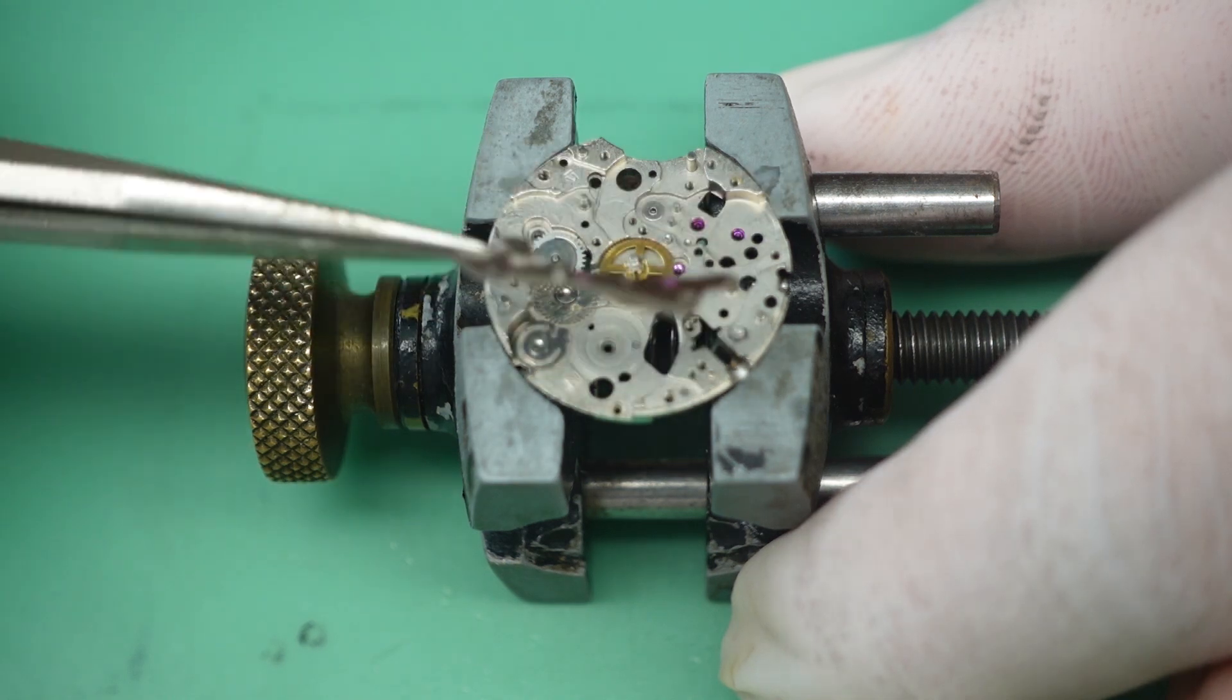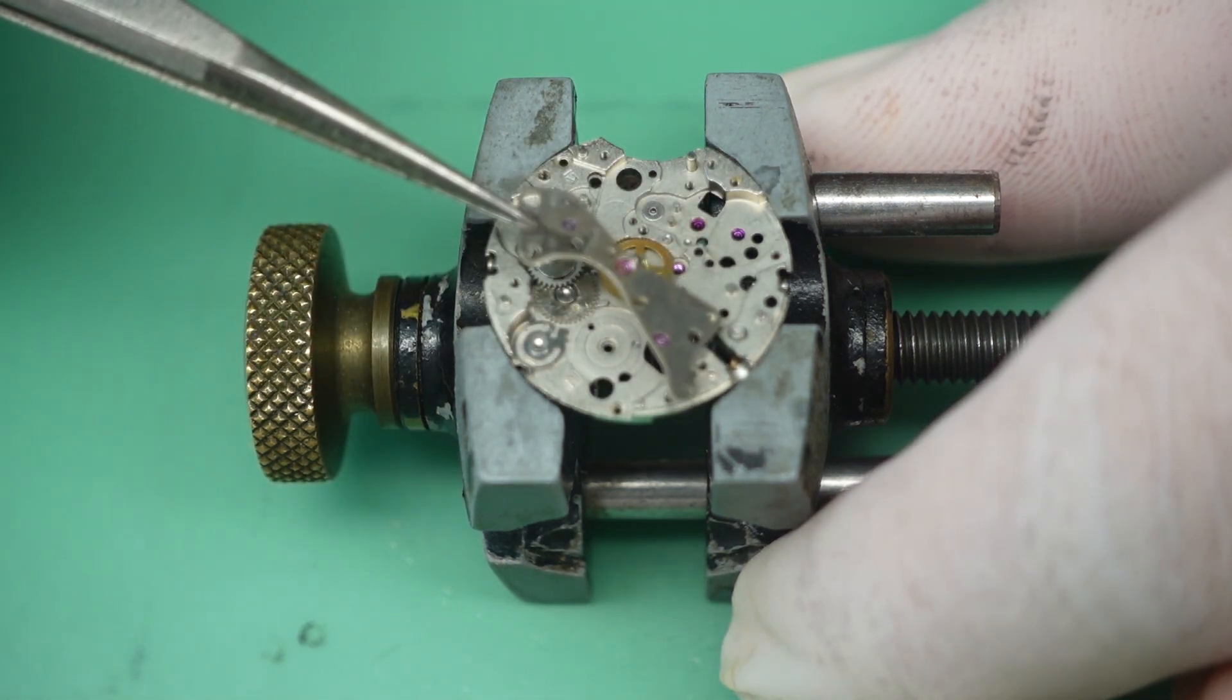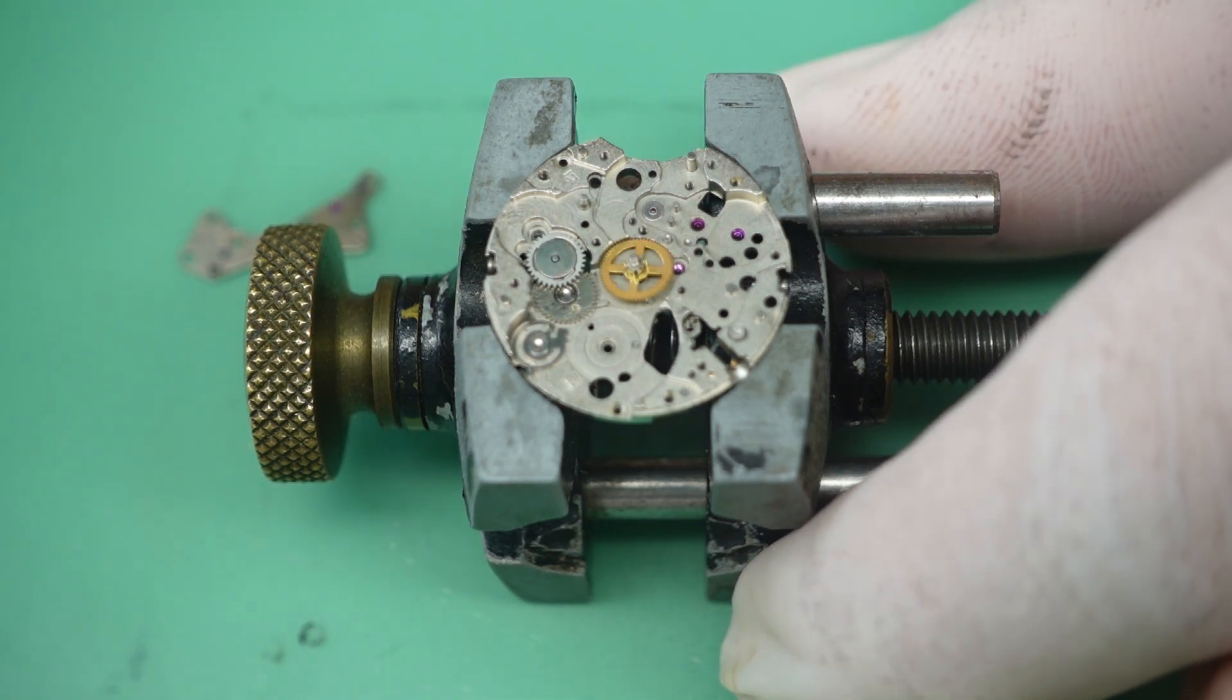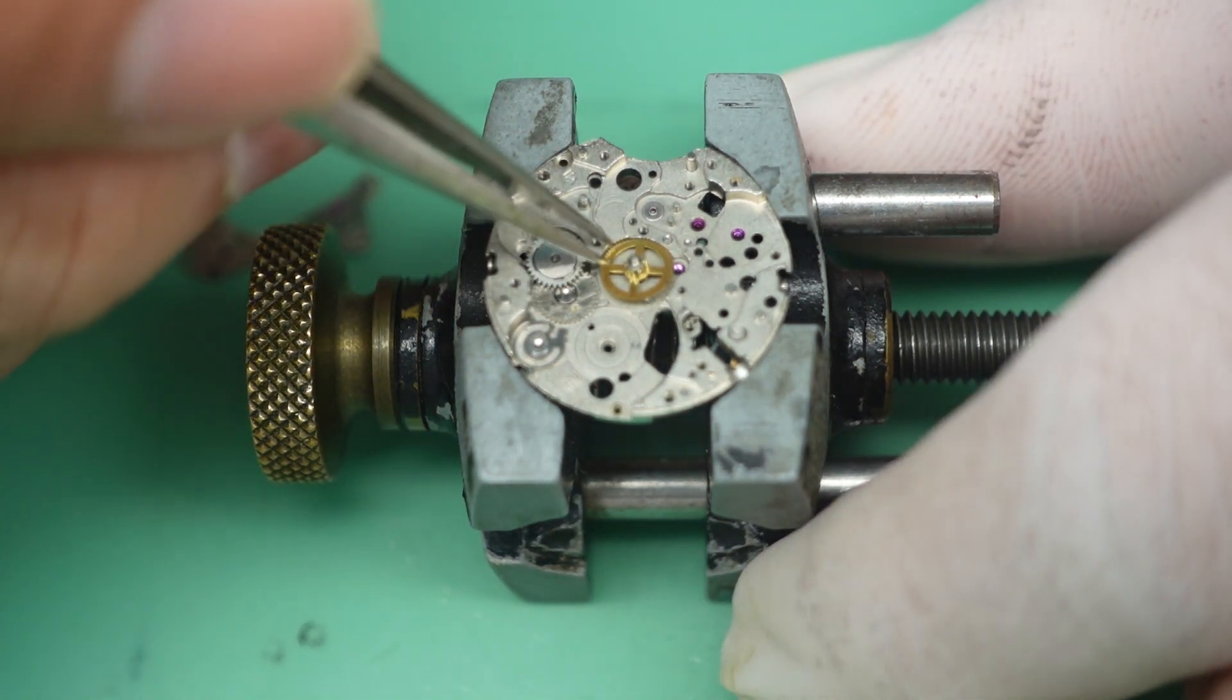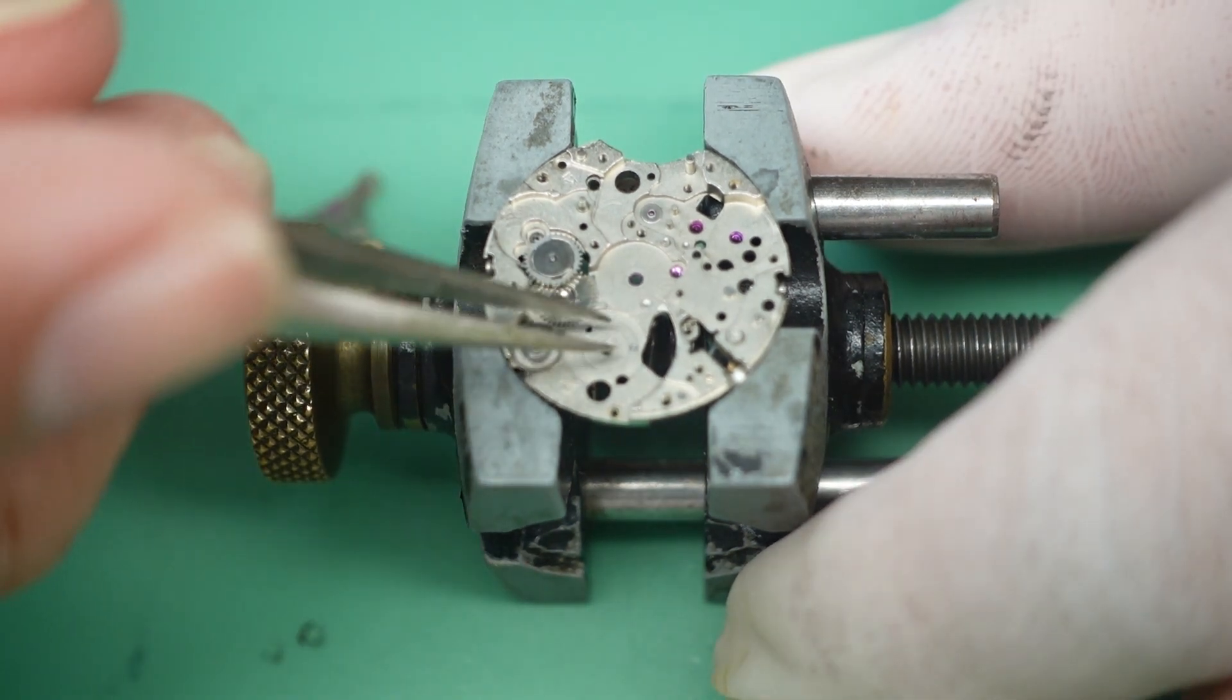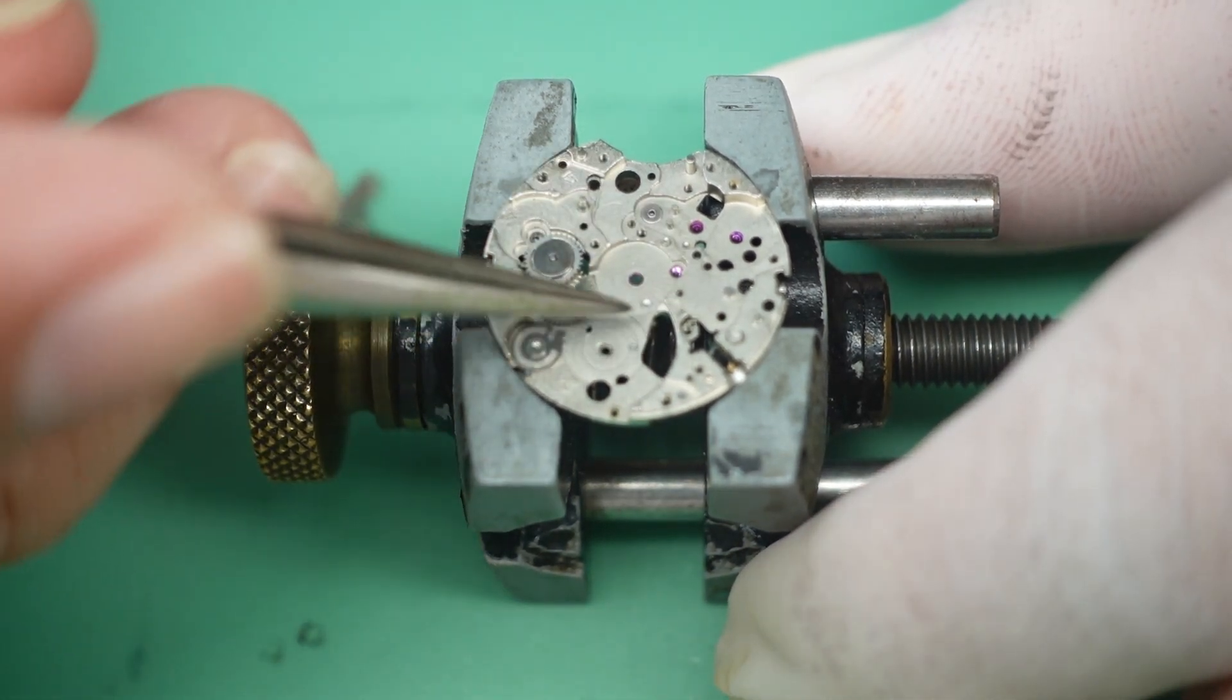Center wheel, and the center wheel. This is the part for the automatic winding mechanism.